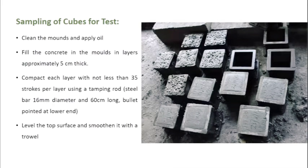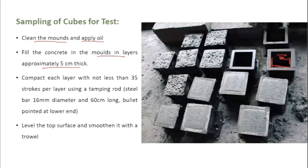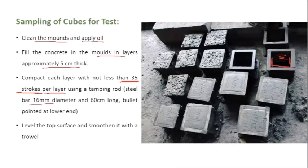For sampling, first clean the molds and apply grease or oil so that after hardening it is easier to remove the concrete specimen. Fill the concrete in the mold in layers of approximately 5 centimeters. Since the mold height is 150 mm, you fill it in three layers. Each layer is tamped with 35 strokes per layer using a tamping rod of 16 mm diameter and 600 mm length.